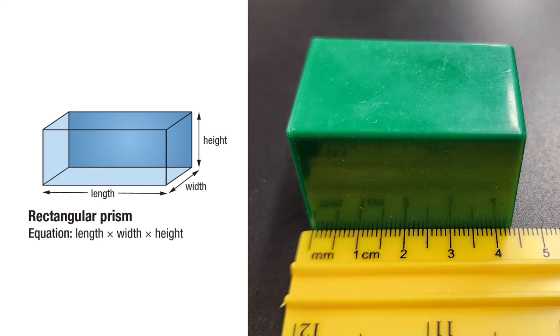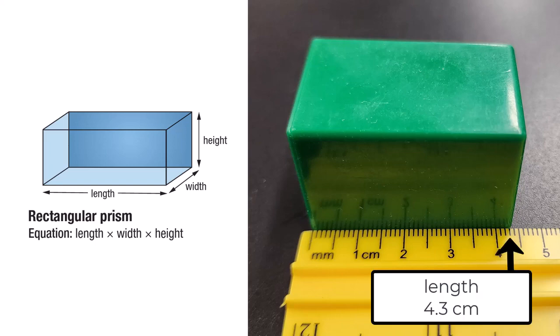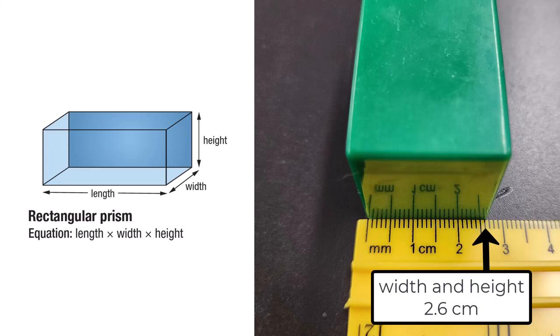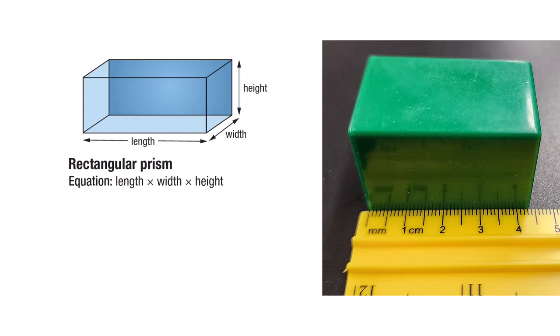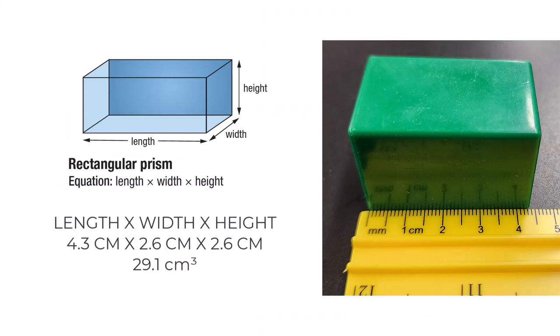In this example, the shape is a rectangular prism, with a length of 4.3 cm, width of 2.6 cm, and height of 2.6 cm. To determine the volume of this shape, we will use the formula for the volume of a rectangular prism and input our measurements. The volume is 29.1 cm³.